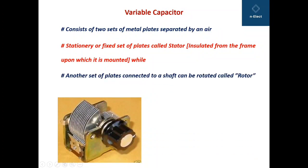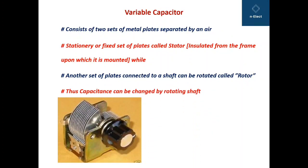The other set of plates is connected to this shaft and can be rotated, and hence they are called rotor plates. Capacitance can be changed by rotating the shaft — when this shaft is rotated in the clockwise direction, these rotating plates move into the stator plates, and when rotated anti-clockwise, these plates move out of the stator plates.